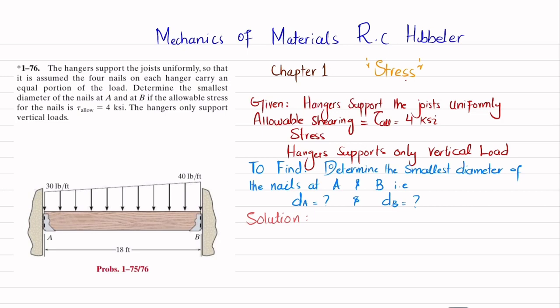Let's start with the solution. The first step is: if you remove the hanger support at A, it will be replaced by a vertical reaction represented as FA. And if you remove the hanger at B, there will be a reaction force by this hanger on the joist, which will be FB. We will find FA and FB using equations of equilibrium.